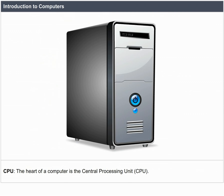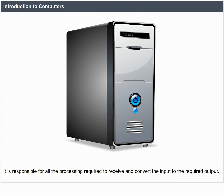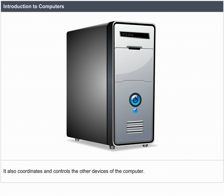CPU — The heart of a computer is the Central Processing Unit, or CPU. The CPU is housed inside a box-like structure called the system unit. It is responsible for all the processing required to receive and convert the input to the required output. It performs all arithmetic calculations and logical operations, and coordinates and controls the other devices of the computer. The memory of the computer is also housed inside the CPU.